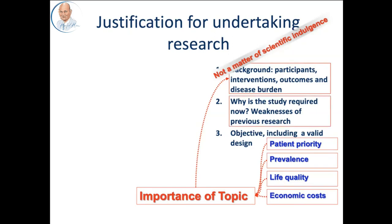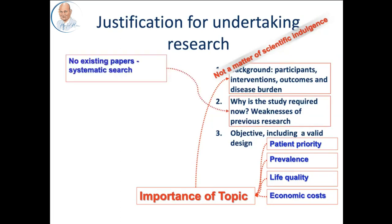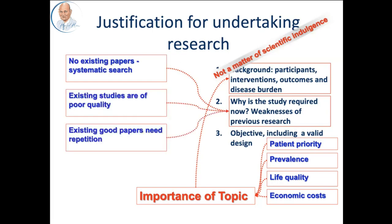Once you have an important topic, the next thing is: why do you need to do the study today? You need to figure out whether previous papers exist on the same topic and what is the quality of these papers. If there are no papers, you can commence a new study. If previous papers are not of a good level of evidence, then you can commence a new study of good quality. If previous papers of good level of evidence exist, then think about whether there is a justification for repeating the study. If you can meet all these criteria, you have the first starting point of a study with integrity that you can present to the ethics committee.